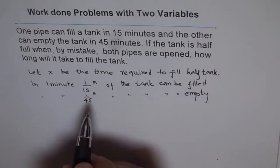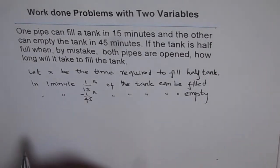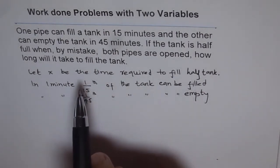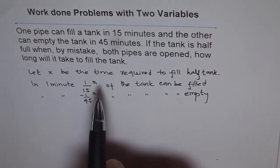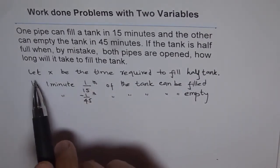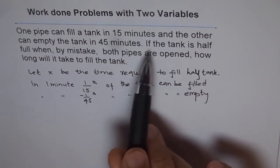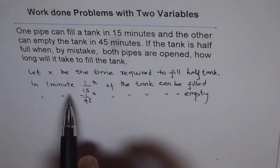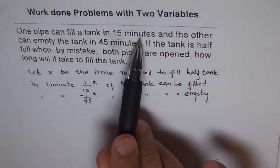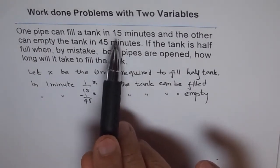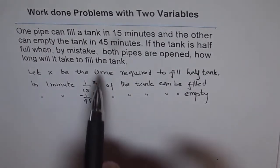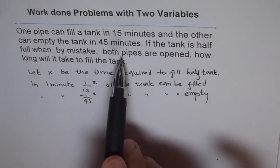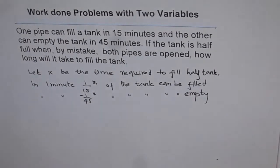When we say empty, that means negative. So when we use it in word problems, we will use a negative sign for the emptying pipe. Let x be the time required to fill half the tank since the pipes are open when the tank is half full. One pipe fills the whole tank in 15 minutes, so in one minute it fills 1/15 of the tank. The other pipe empties the whole tank in 45 minutes, so in one minute 1/45 of the tank is emptied.